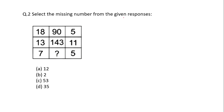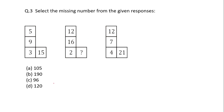Select the missing number from the given responses. Here is a table that must be following some sequence or pattern. This one is pretty easy: 18 × 5 = 19 — looking at the pattern, 18 × 11 = 143. So what should be the missing number? 7 × 5 = 35, so option D is correct. Don't forget to subscribe to this channel and join our Telegram channel.